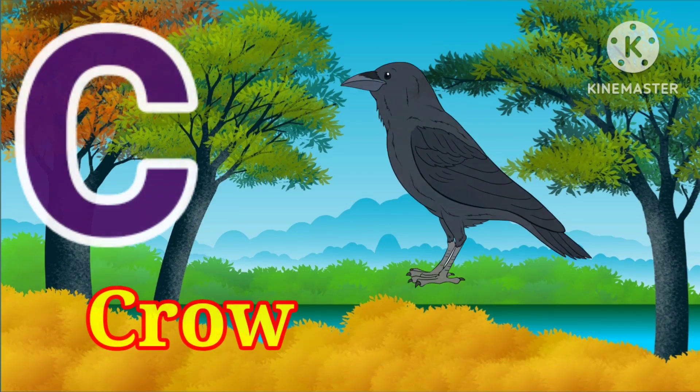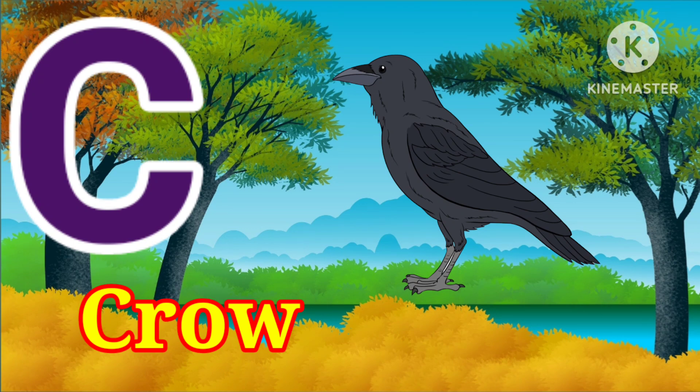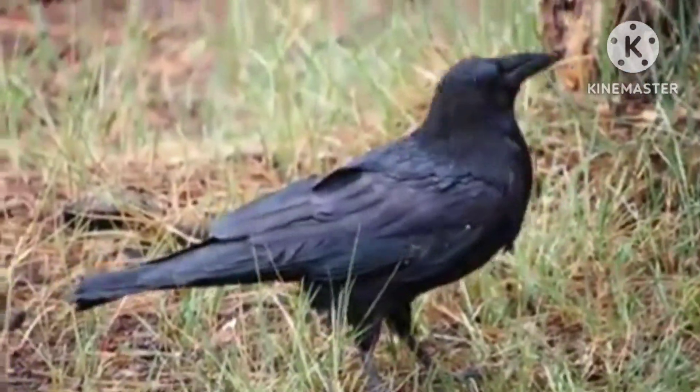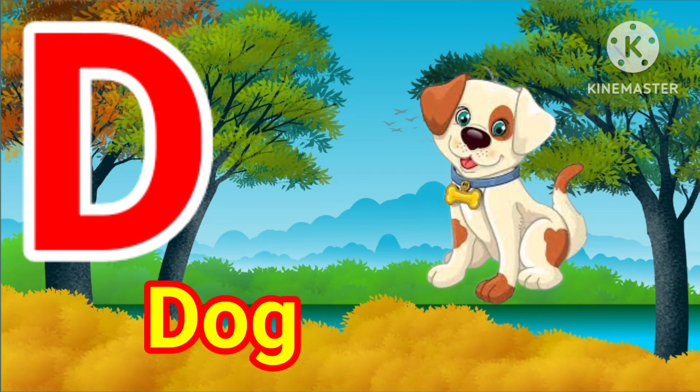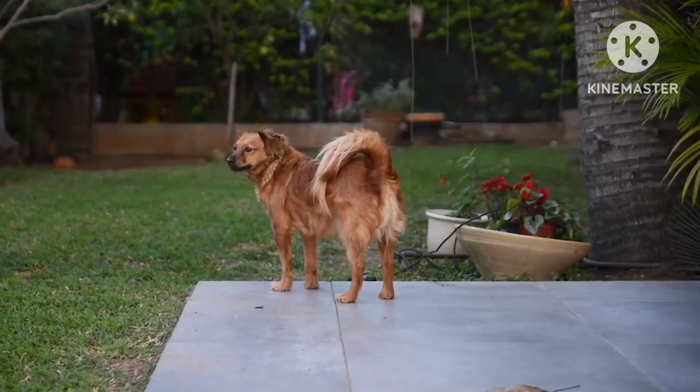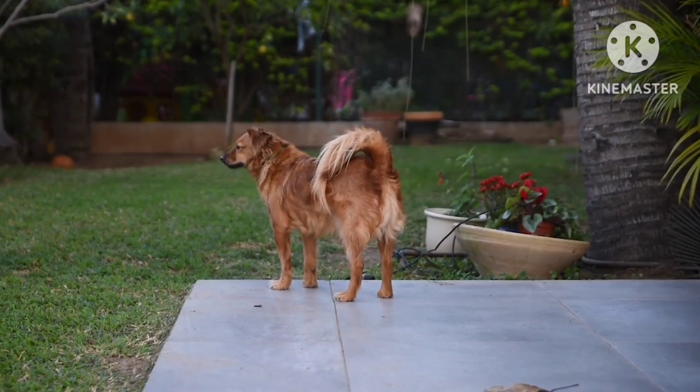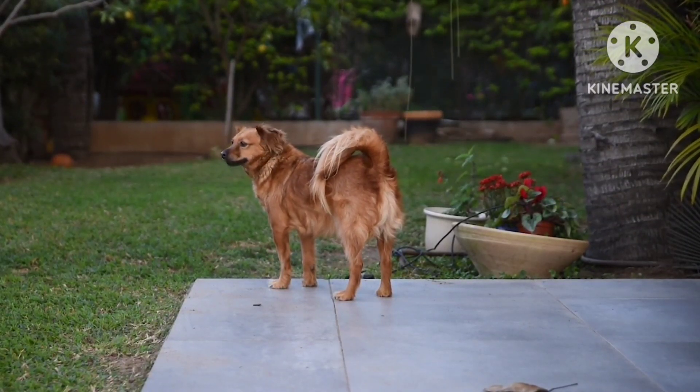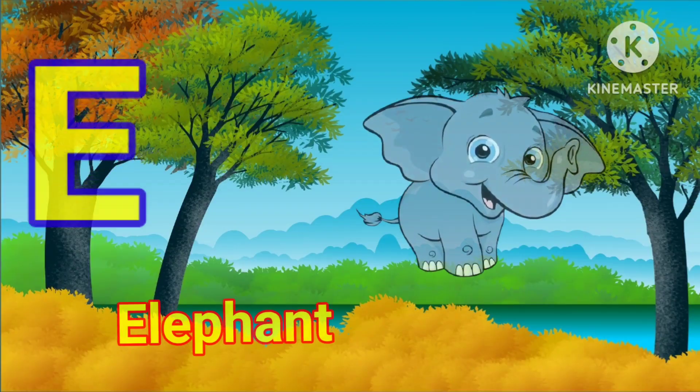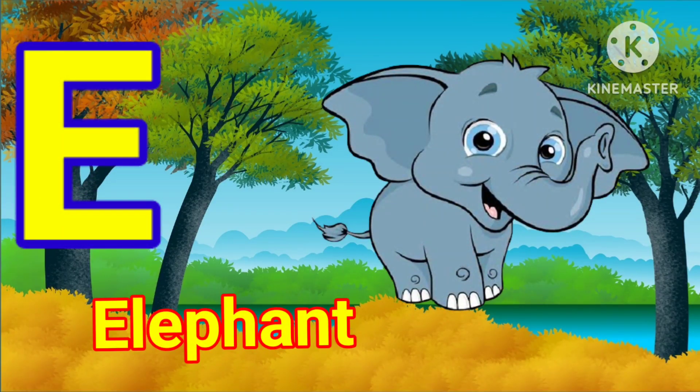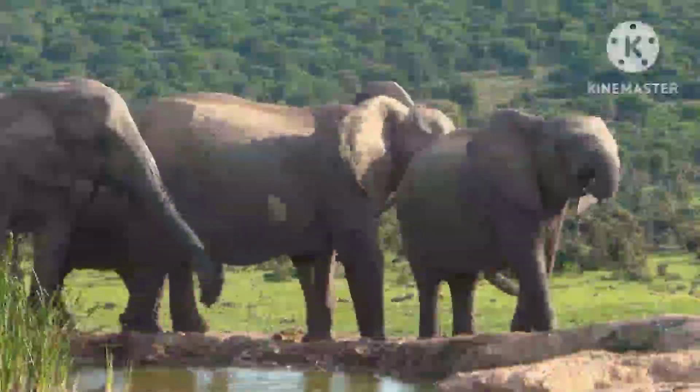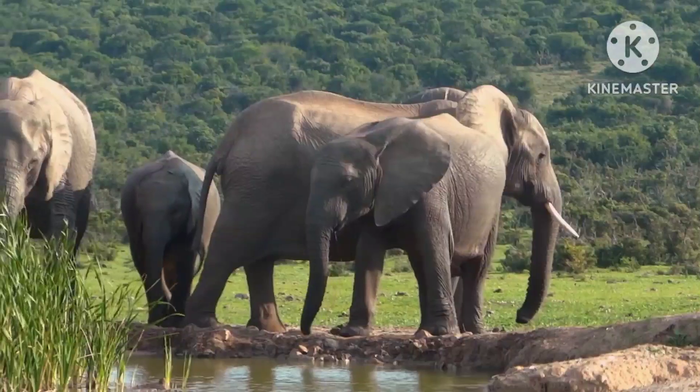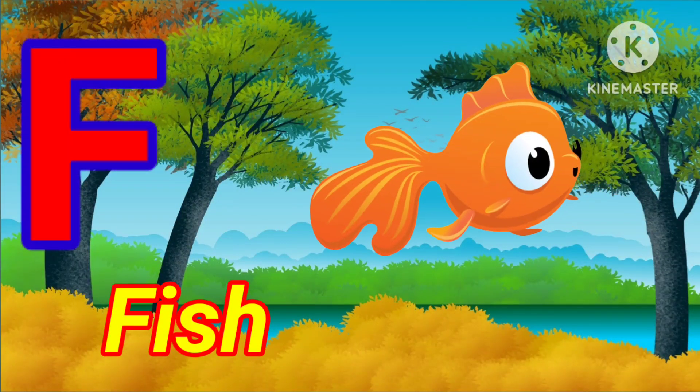C for crow. D for dog, E for elephant, F for fish.